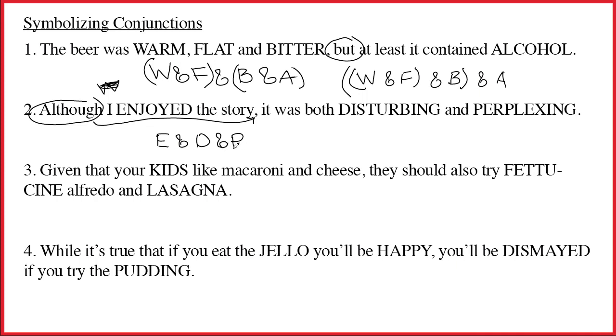Of course, we also know that the order of the letters is completely irrelevant. The ampersand is commutative, and so you can arrange these things in any order you'd like. Number three. Given that your kids like macaroni and cheese, they should also try fettuccine alfredo and lasagna.